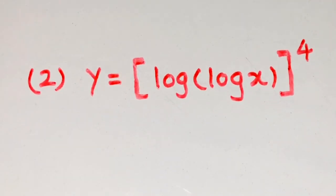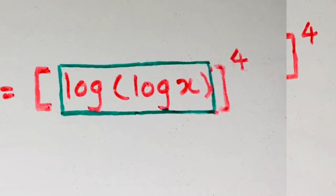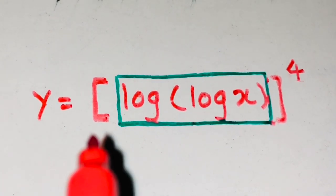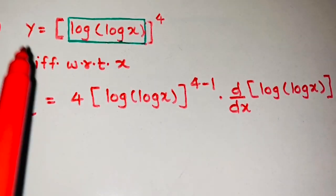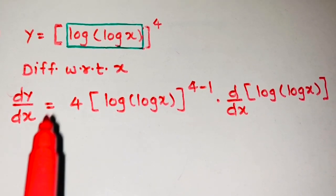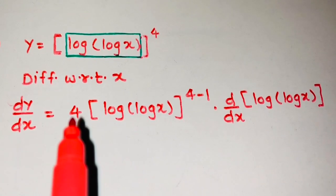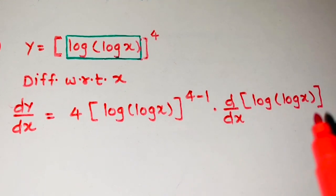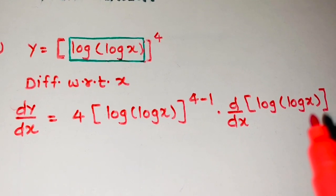Second question: y is equal to log of log x, the whole raised to 4. In this question, log of log x is acting as a box. So y is in the form of box raised to n. We differentiate y with respect to x: since it is in the form of box raised to n, we apply the formula — that is 4 times box raised to 4 minus 1, into the derivative of this box. Now log of log x is not a standard function, so we cannot differentiate it directly.